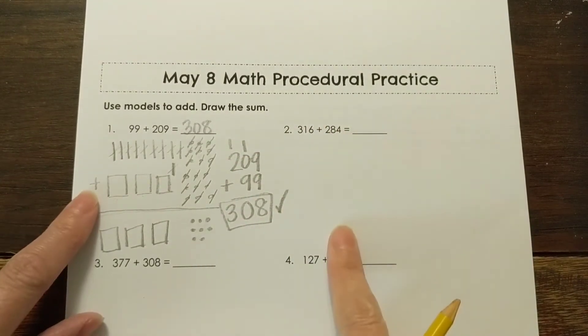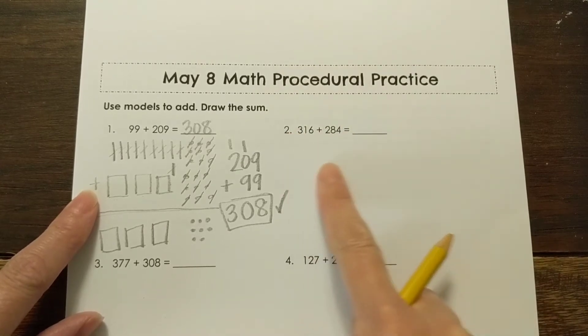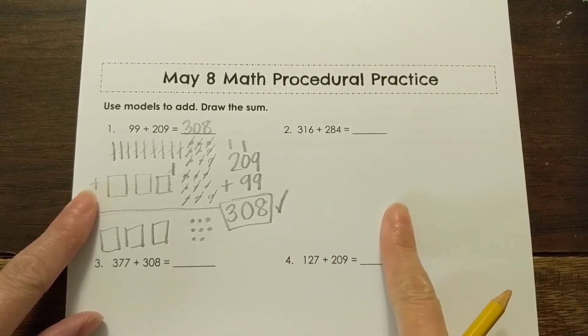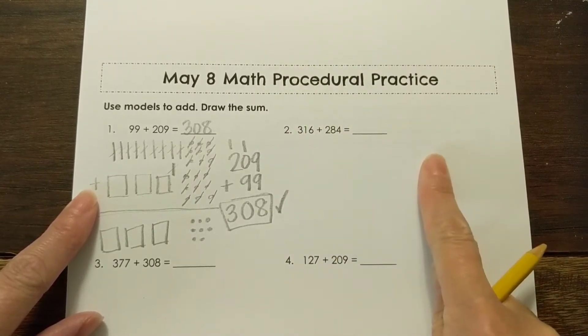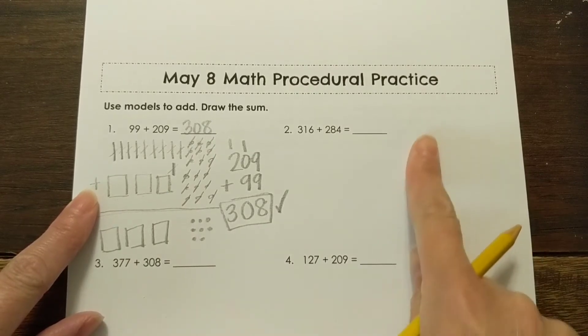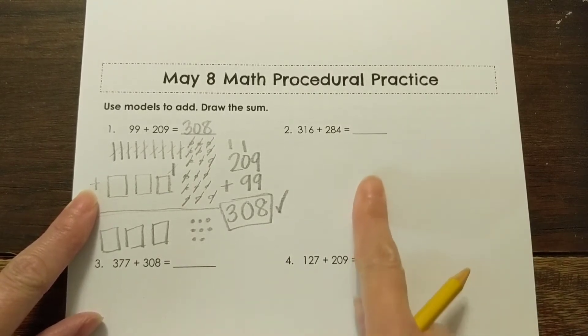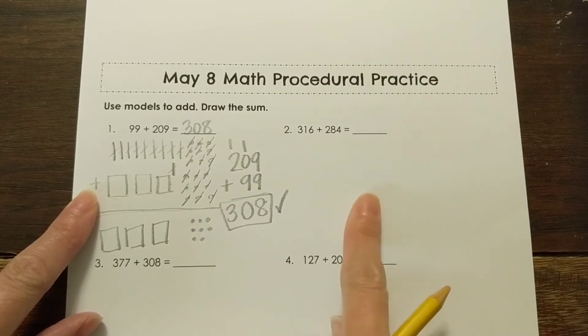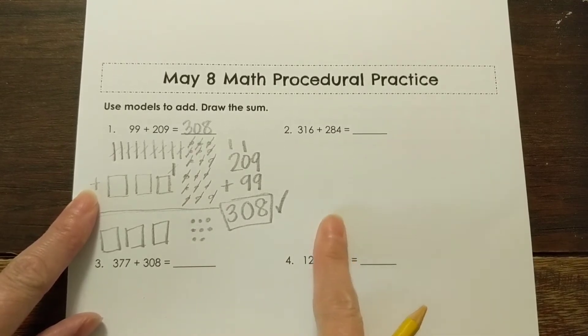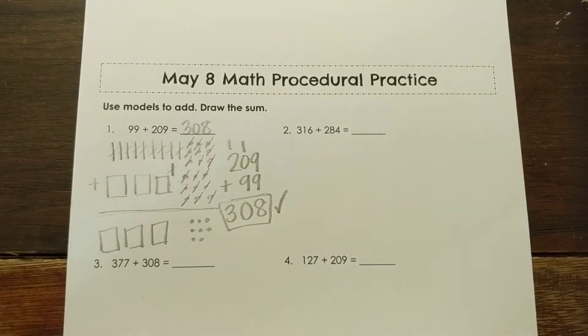I would like you to do the same thing with these other problems. Draw out your base tens, your hundreds, tens, and your ones. And add your ones up first, then add your tens. See if you need to make another 10, if you need to make another 100. Then you go to your hundreds last.